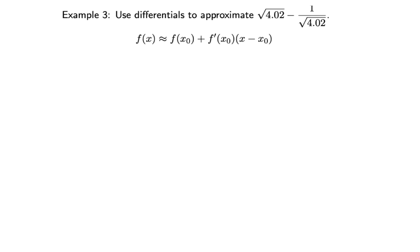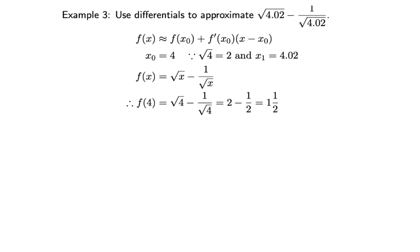Example 3: Use differentials to approximate √4.02 − 1/√4.02. We set x₀ = 4 because √4 = 2 is the nearest to 4.02, and x₁ = 4.02. f(x) = √x − 1/√x.